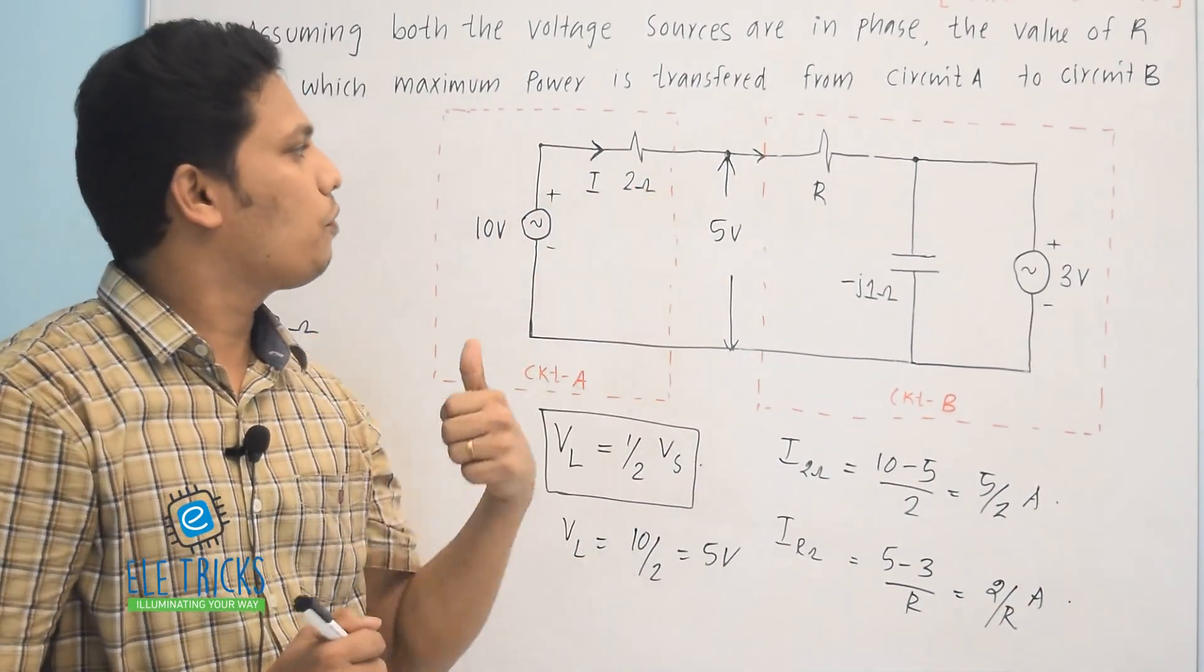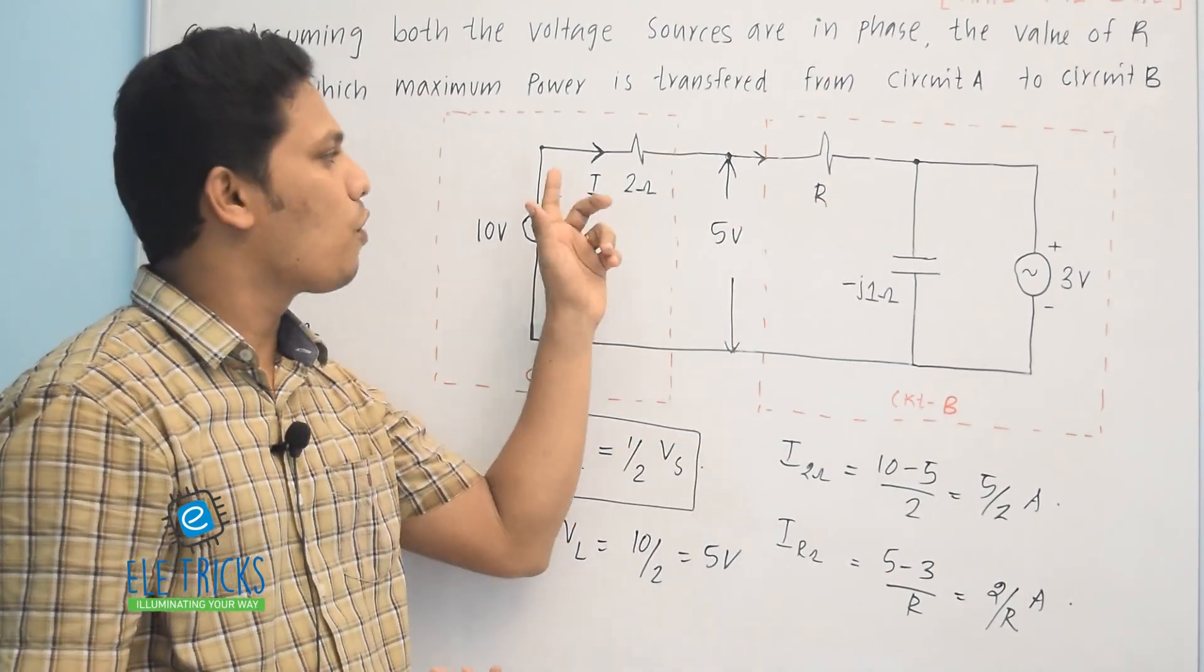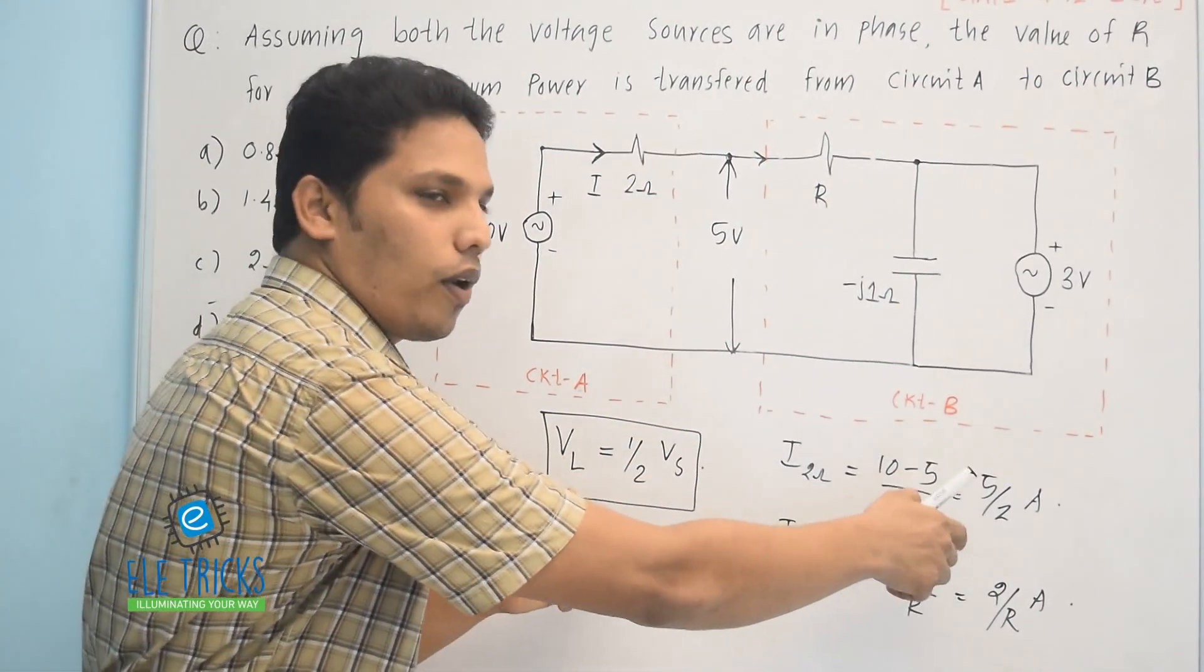Then you just see the figure. Actually this 2 ohm and R ohm are connected in series. So the current flowing through both resistances are the same. So you just equate this.